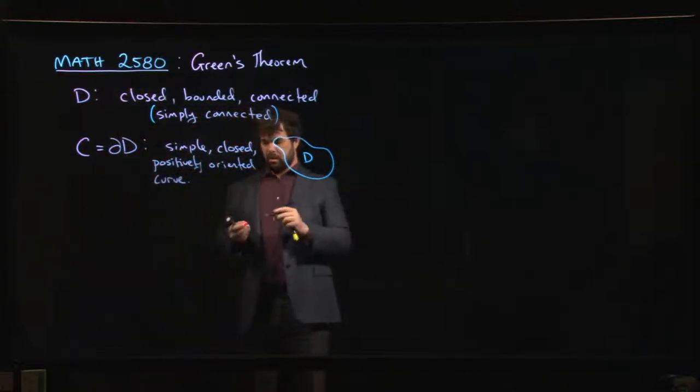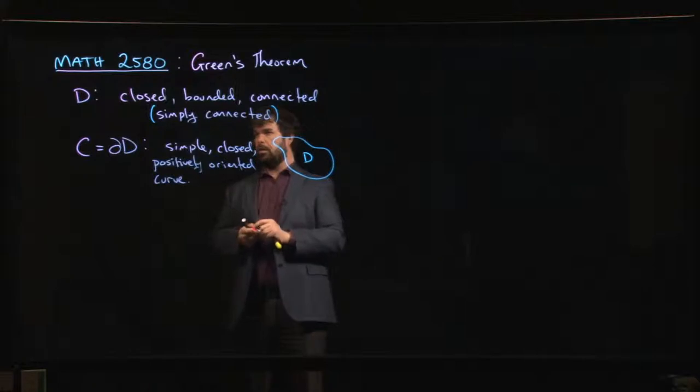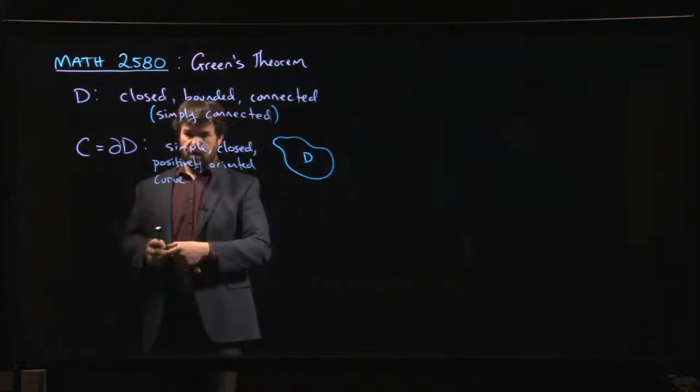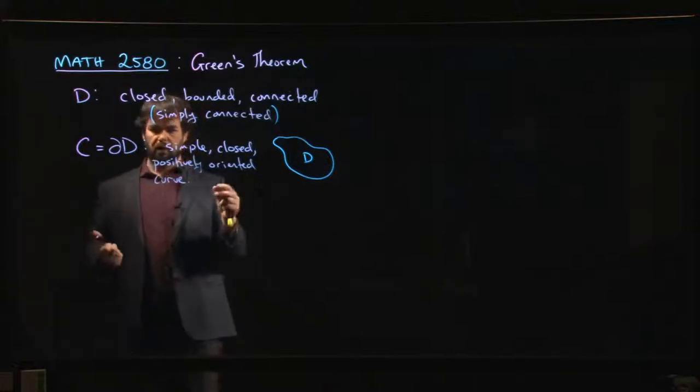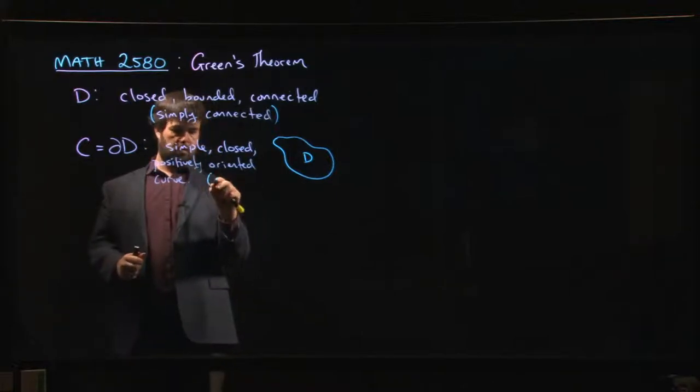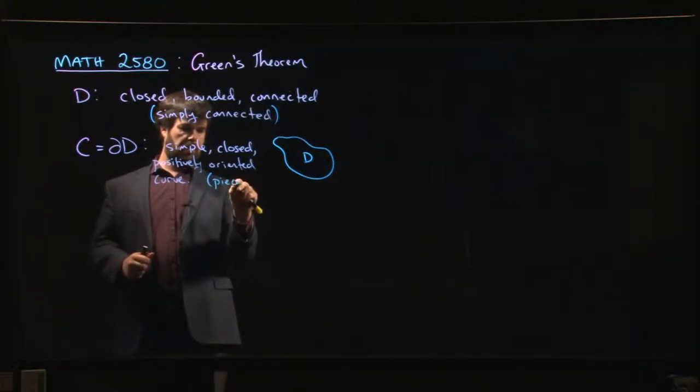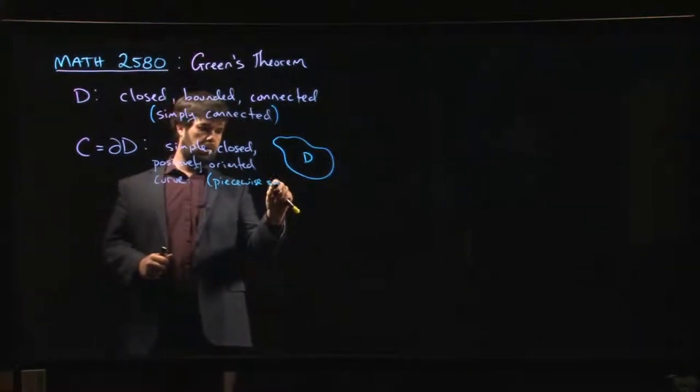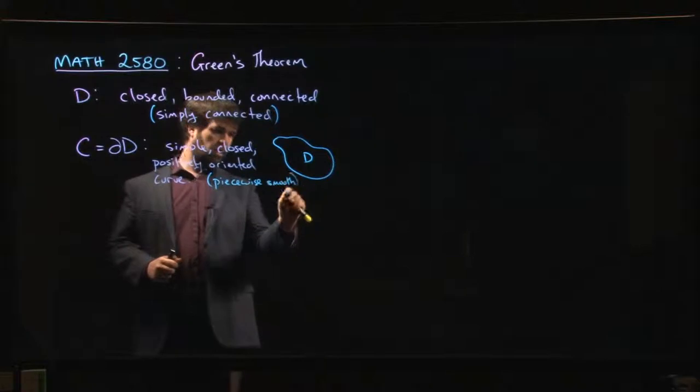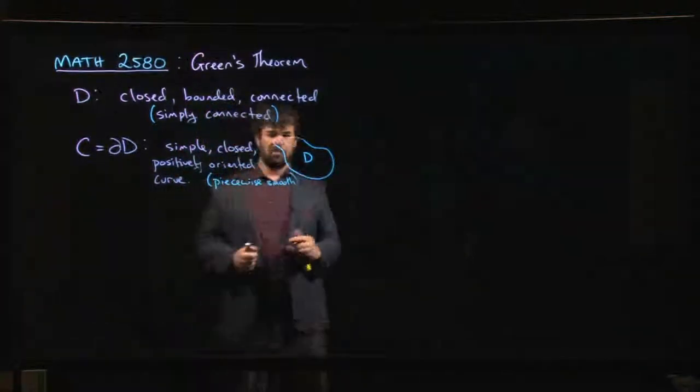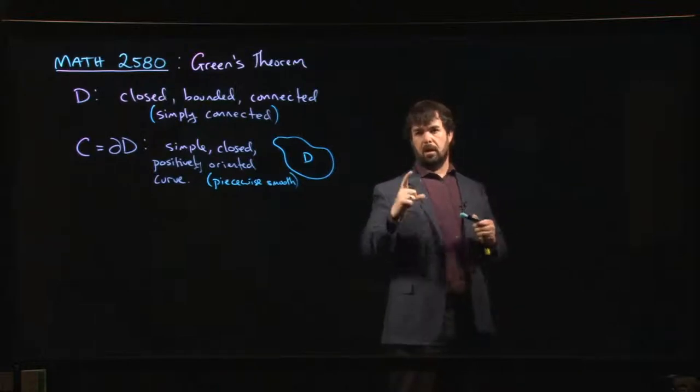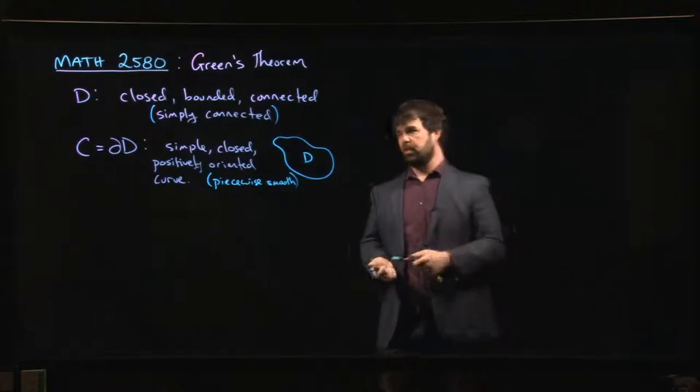Being the boundary of D means that C is going to be a simple closed positively oriented curve. One additional condition we're putting on it, whether you think of this as a condition on the region or the curve, is that we want it to be piecewise smooth.